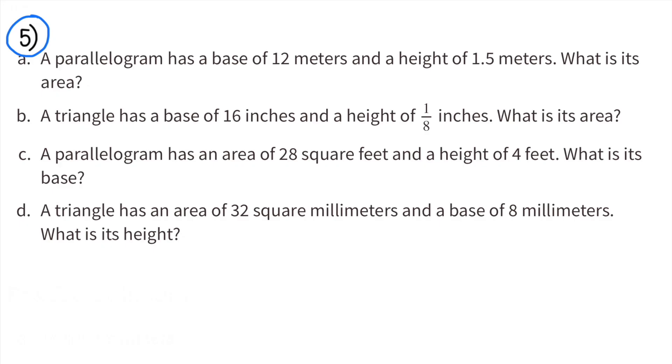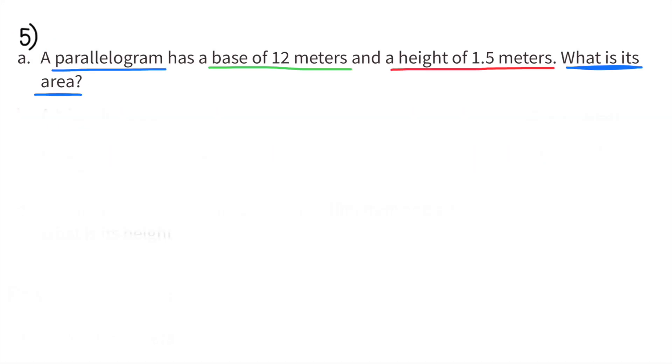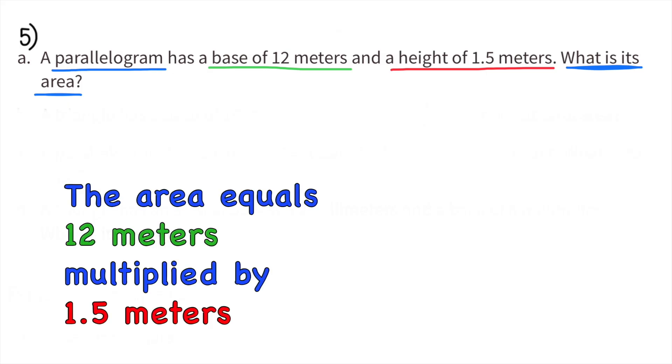Number 5a: A parallelogram has a base of 12 meters and a height of 1.5 meters. What is its area? For a parallelogram, you're going to do base times height to find the area. So 12 meters times 1.5 meters equals 18 square meters. The area for this parallelogram is 18 square meters.